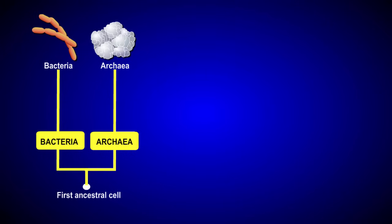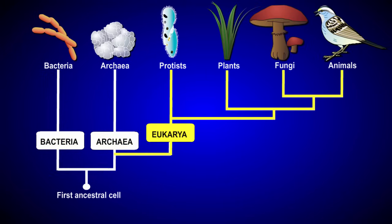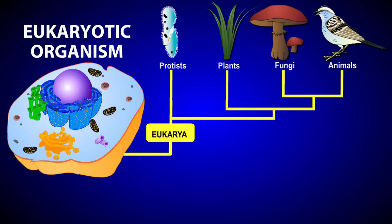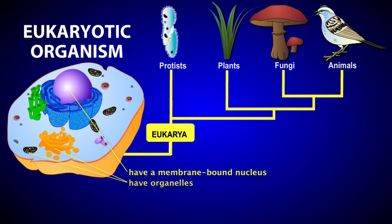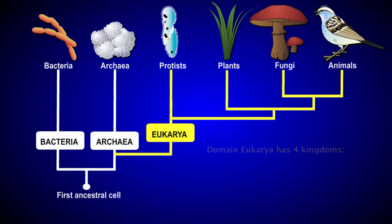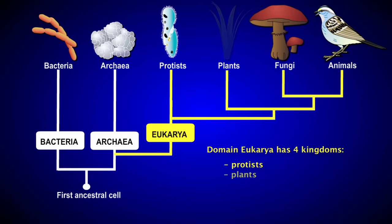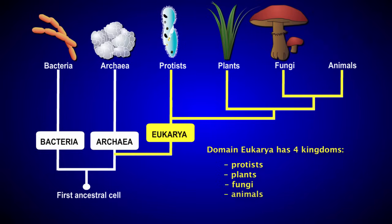The final domain, domain eukarya, includes the eukaryotes, or organisms that have a membrane-bound cell nucleus. In addition, most eukaryotes have internal organelles, such as mitochondria and chloroplasts, and eukaryotic cells are much bigger than the prokaryotes. Domain eukarya is subdivided into four kingdoms: the protists, plants, fungi, and animals.